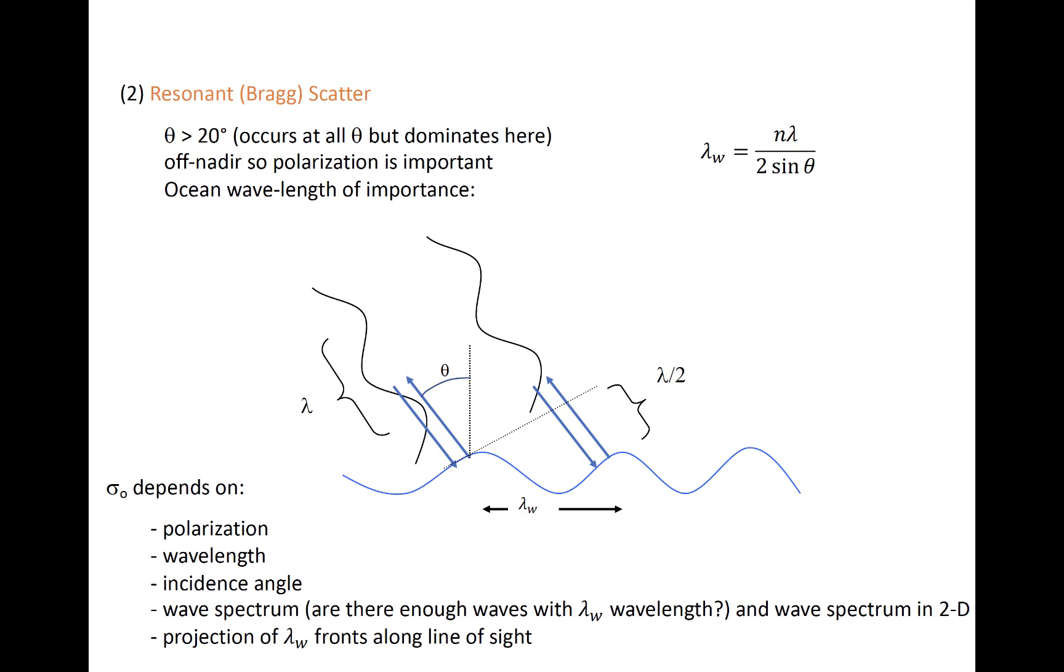Bragg scatter occurs when the backscatter of two successive waves of the wavelength lambda_w are in phase with each other, thus increasing the power returned to the sensor. For small values of n, this generally involves short wavelength wind-driven capillary waves, since the wavelength of the transmitted radiation is on the order of a few centimeters. The diagram here illustrates what we've just said in terms of the equation at the top right, where lambda_w is basically the distance from ridge to ridge, or from trough to trough, and is related closely through the sine of the incidence angle to the wavelength of the radiation, lambda.